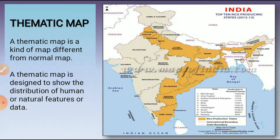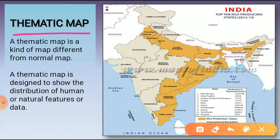A thematic map is a kind of map different from a normal map. A thematic map is designed to show the distribution of human or natural features or data. Thematic maps focus on specific information like road maps, rainfall maps, maps showing distribution of forests, industries, etc. For example, a road map shows the road network of an area, and a railway map shows the rail network. A thematic map can also show industries, crop production, population density, etc.